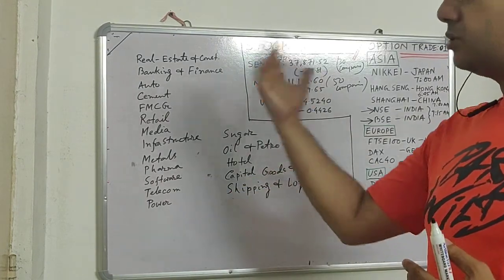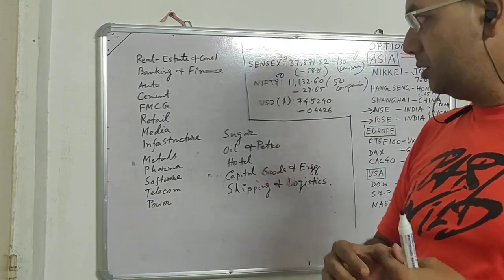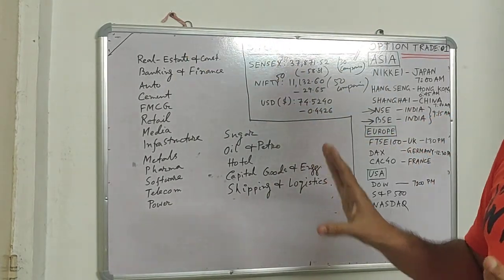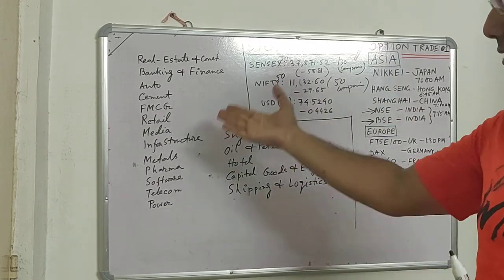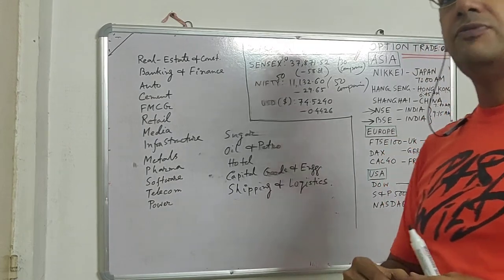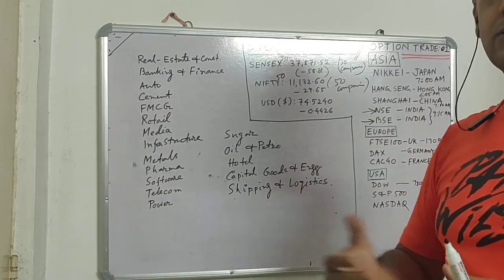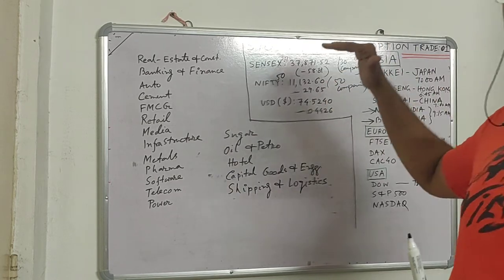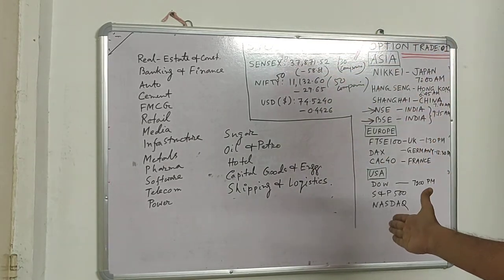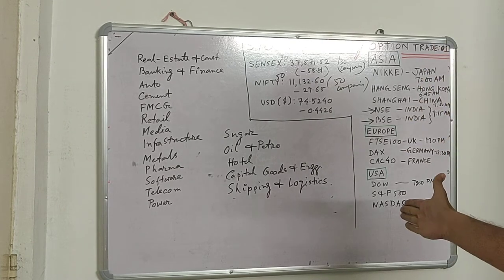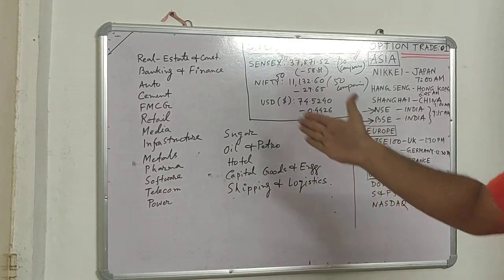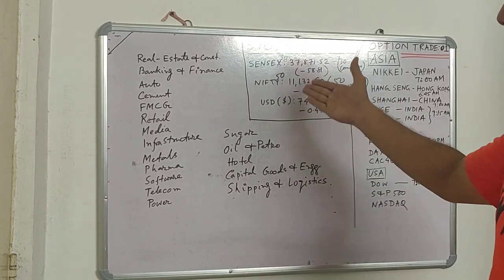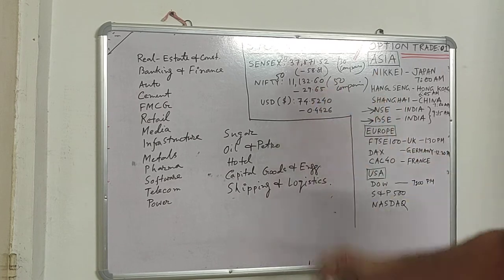This is a general training session, so I will not recommend or name any particular company. During this course on stock market and option trading, you will figure out specific companies based on information from various available sources. We have so far studied what is stock market, the world's stock exchanges, their opening times, the breakdown of companies, and how Nifty 50 and Sensex 30 work.